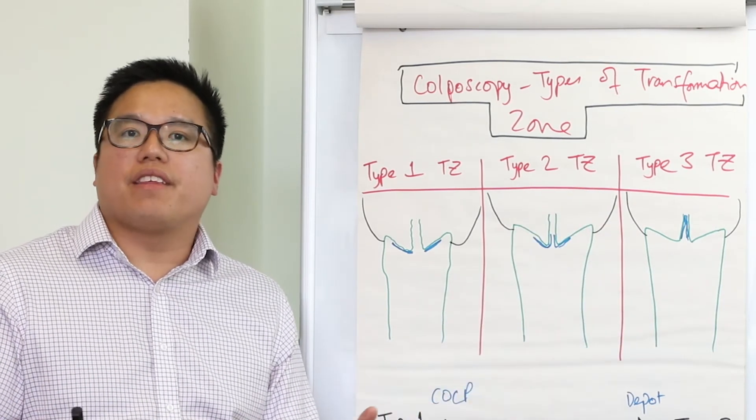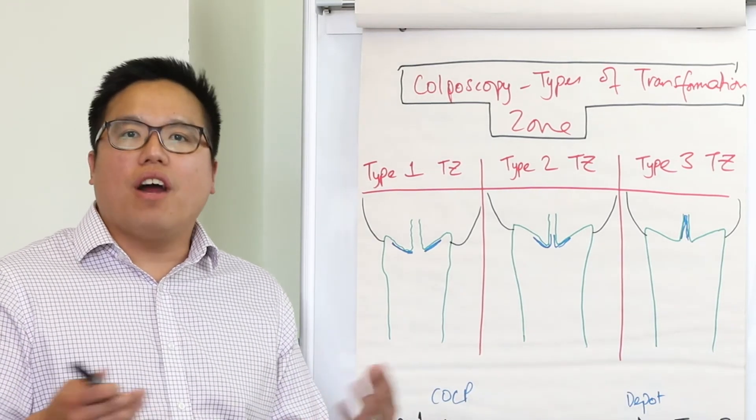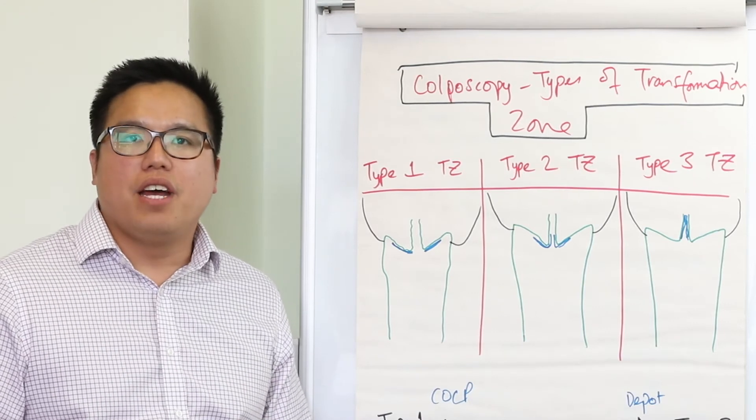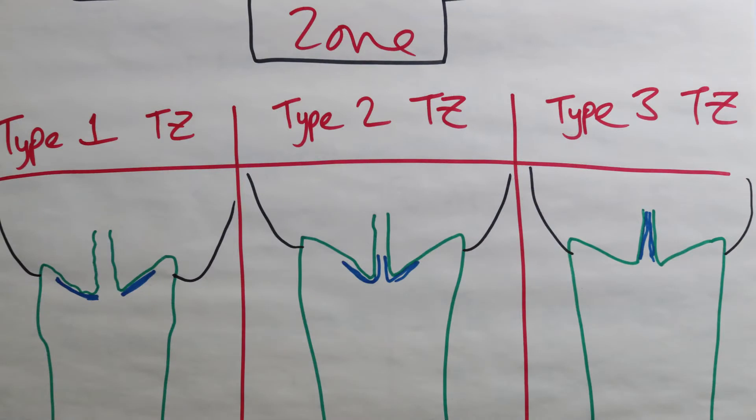So the difficulty with type 3s is when treating, the colposcopists will want to remove the entire part of the transformation zone and therefore the whole of the SCJ for the pathologist to have a good closer look at.